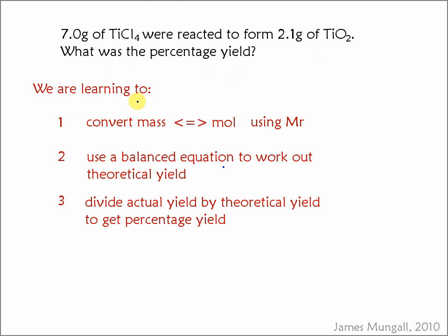To do this, we're learning to convert mass and mole using the Mr or the relative formula mass, use a balanced equation to work out theoretical yield, and then divide actual yield by theoretical yield to get the percentage yield.